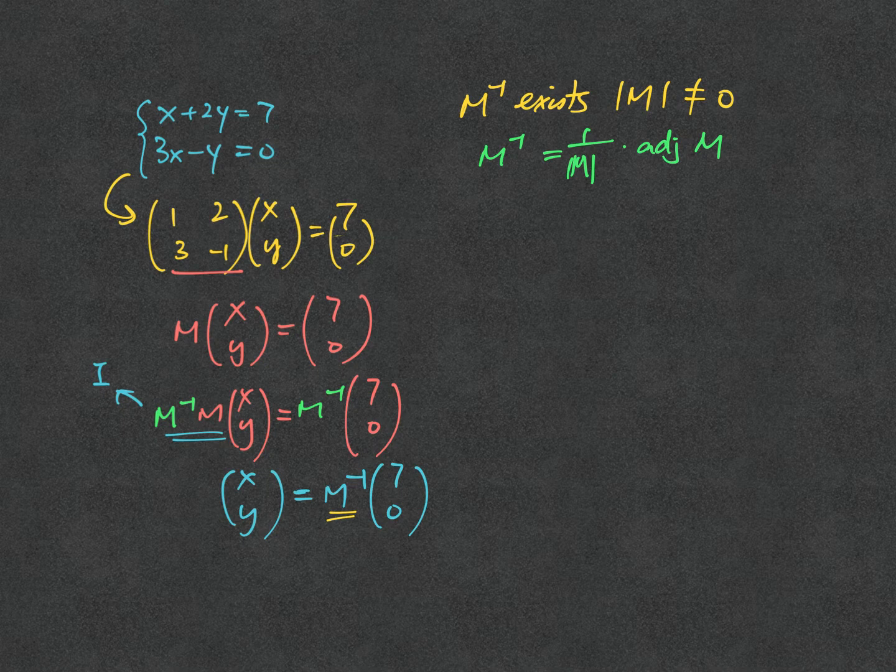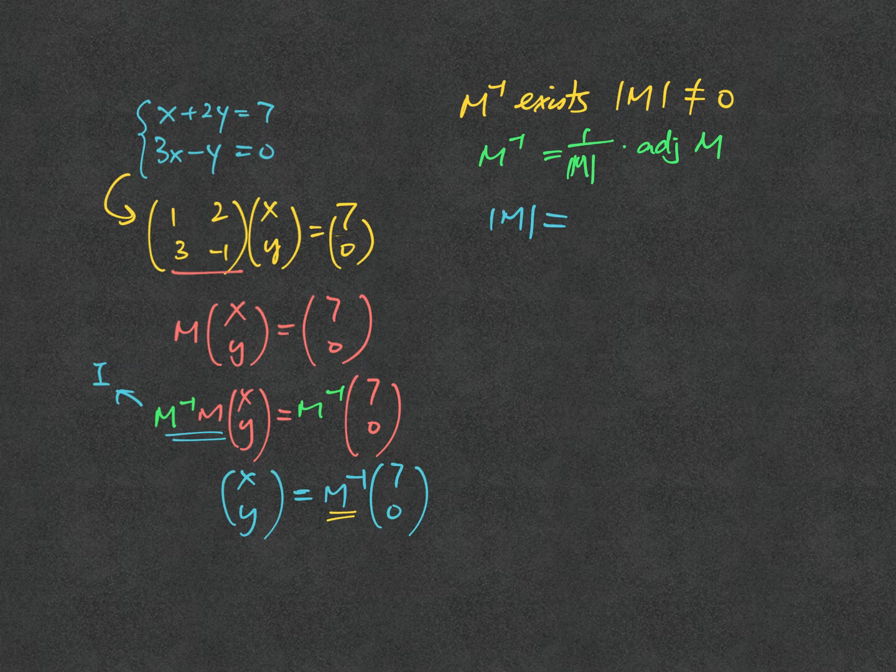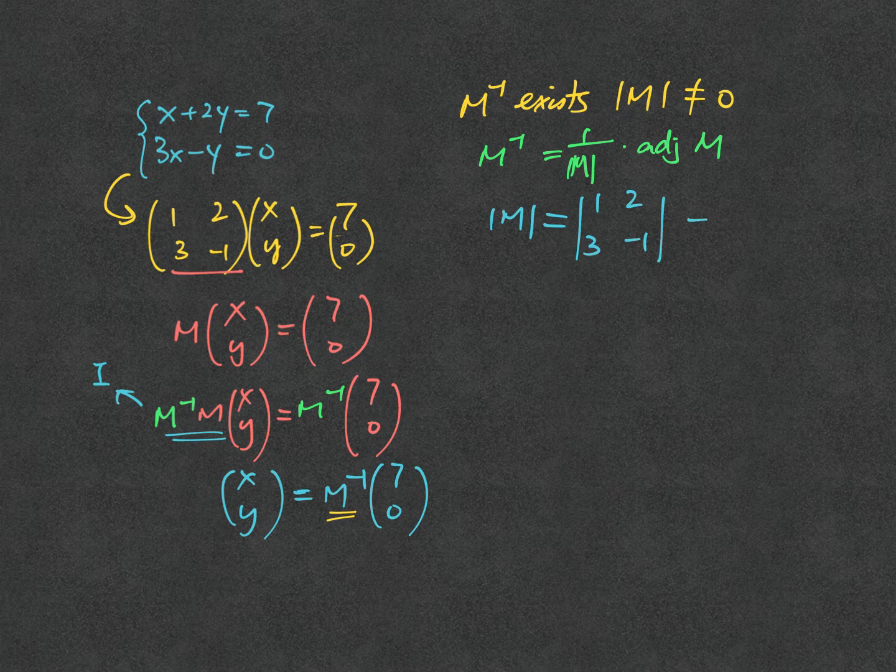So now let's solve the question as follows. We first find out determinant of M. We look at the determinant here, which is 1, 2, 3, minus 1. So it gives you minus 1 minus 2 times 3, which is negative 7.